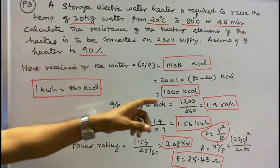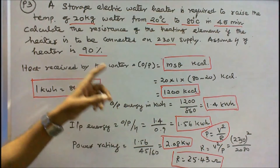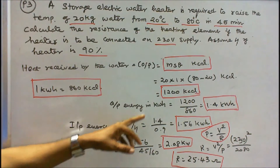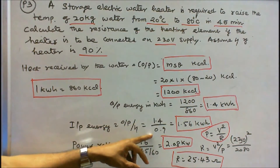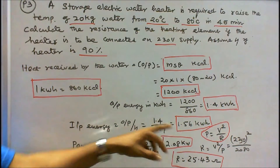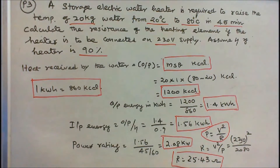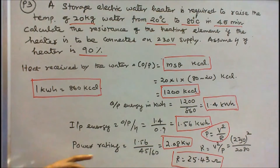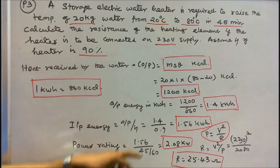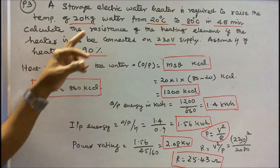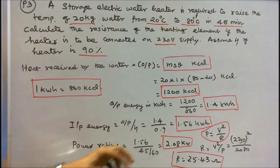With output energy known and efficiency = 0.9, input energy = output divided by efficiency = 1.4 divided by 0.9 = 1.56 kWh. Power rating = input energy divided by time = 1.56 divided by (45/60) = 2.08 kW.